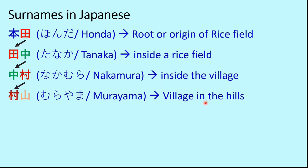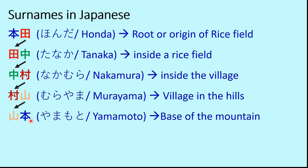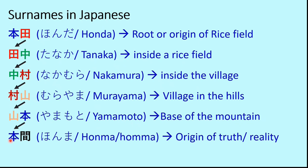Now 'yama' comes to the front. 'Yama' combined with 'motto' — 'hon' and 'motto' represent the same kanji symbol meaning root, origin, or base — gives us Yamamoto, meaning 'the base of the mountain.' Then 'hon' comes to the front again combined with 'ma', which means truth, reality, or something genuine. So Honma, also pronounced Homma for ease, means 'origin of truth or reality.' People also used such surnames.